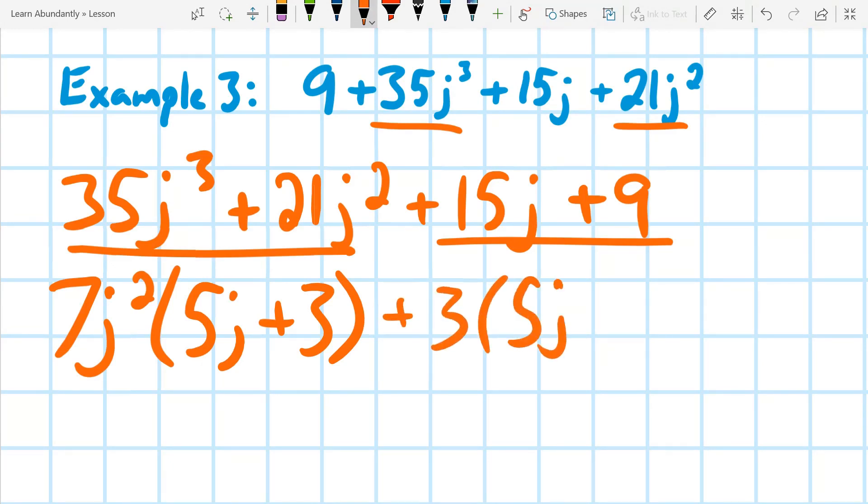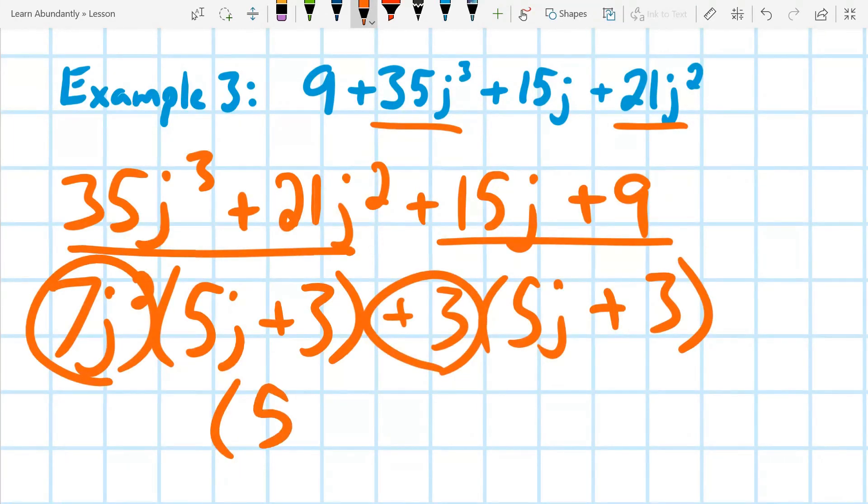which leaves me with 5j plus 3. And so I can see that I've got my two factors, 5j plus 3 and 7j squared plus 3.